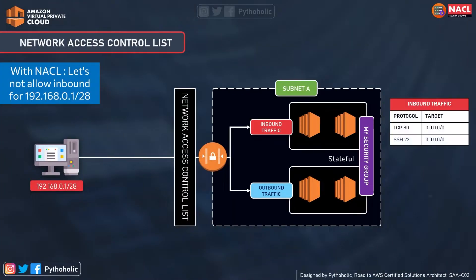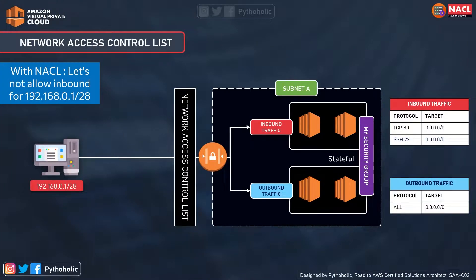Now let's bring in our special task force and place it in front of our VPC subnet, just like a firewall, and configure it to block all traffic from the CIDR 192.168.0.1/28. It doesn't even allow the traffic to enter or reach the security group itself, even if the inbound and outbound rules for security groups allow this IP set. That is the enhanced level of security we needed.